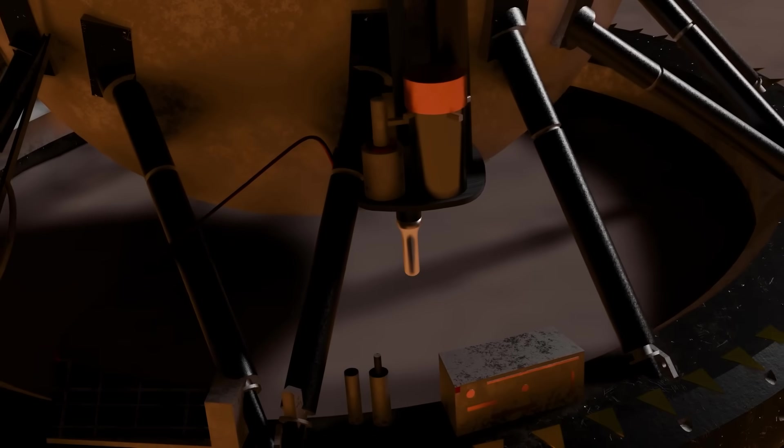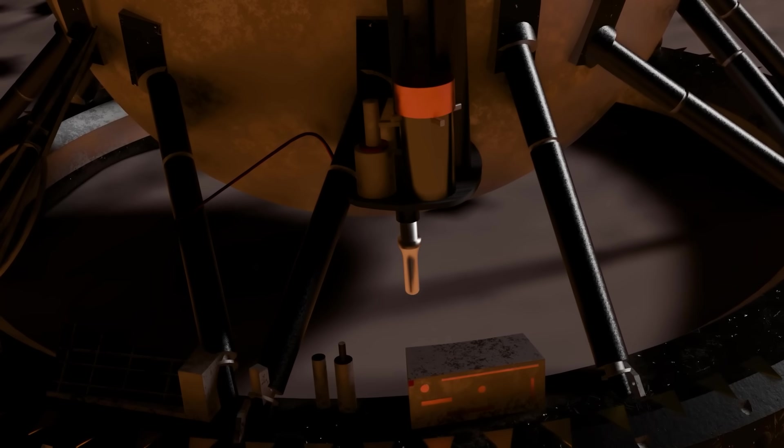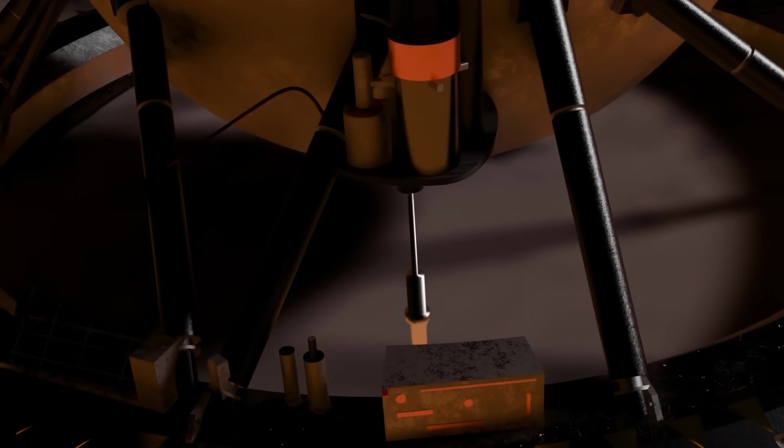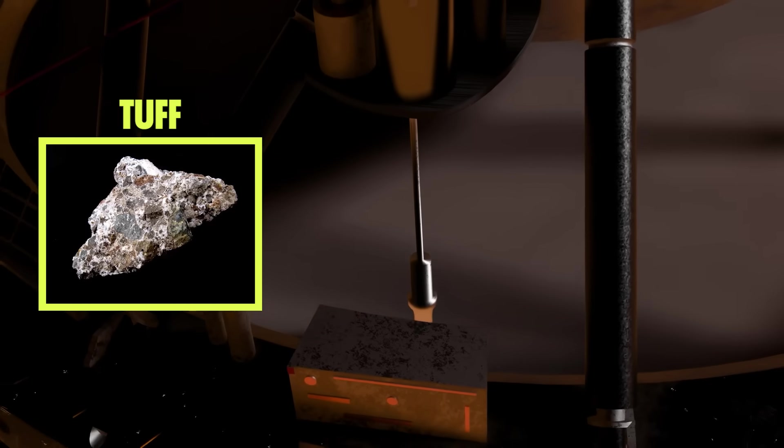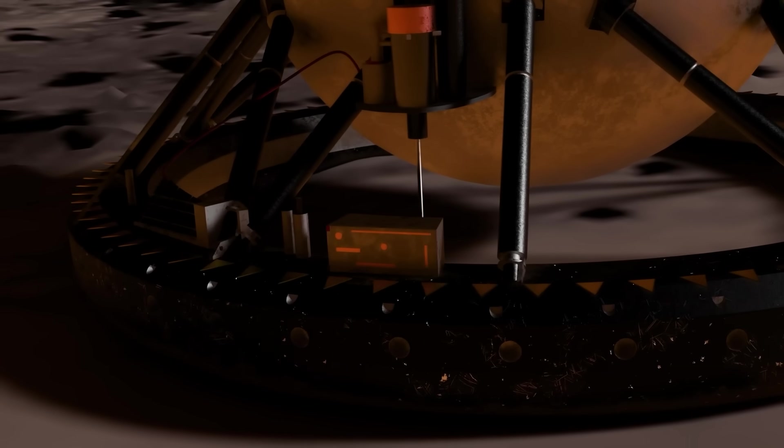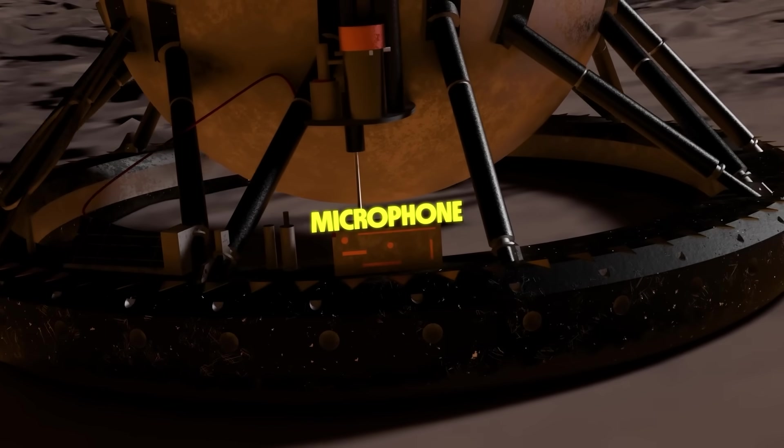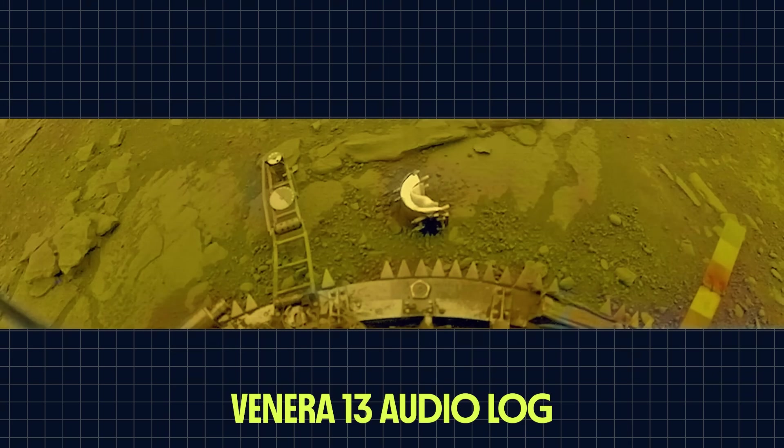But that's not all the Venera 13 could do. The probe was also equipped with a drill and surface sampler to analyze the Venetian soil. What it found was a material very similar to a rock that we call tuff on Earth. It's essentially just solidified volcanic ash. Oh, and one more thing, Venera 13 carried a microphone, so we can listen to the sounds of Venus. It's essentially just wind noise and the sound of the probe doing its thing, but again, like the photos, there's something very strange and alien about it.